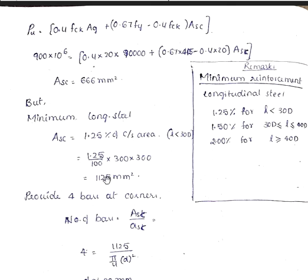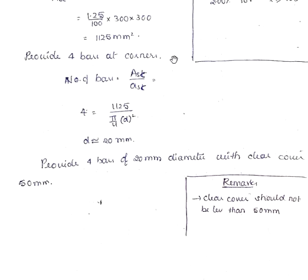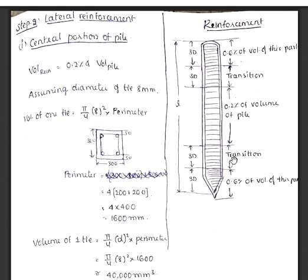If we get the ASC more than this, that's okay. But if it is less, we have to provide the minimum reinforcement. We have to provide 4 bars at the corners. It's a square pile, we are providing 4 bars at the corners. If you use this formula, number of bars is equal to capital ASC by small ASC, you will get the diameter. Here number of bars are 4 as we have taken, 1125 is the ASC we got. And pi by 4 D square is the cross sectional area of the steel bar. The only unknown thing here is D. You can find it. Approximately the value is 20 mm. So we have to provide 4 bars of 20 mm diameter with clear cover 50 mm.